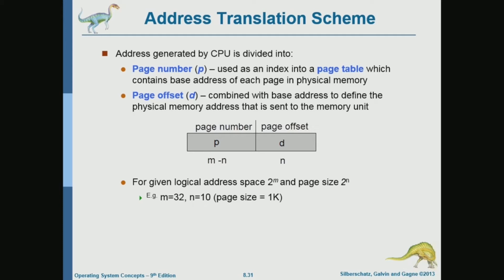In this example, assuming the page size is 1K, which is 2^10, we need 10 bits in order to represent the page offset. So the offset is going to be 10 bits.